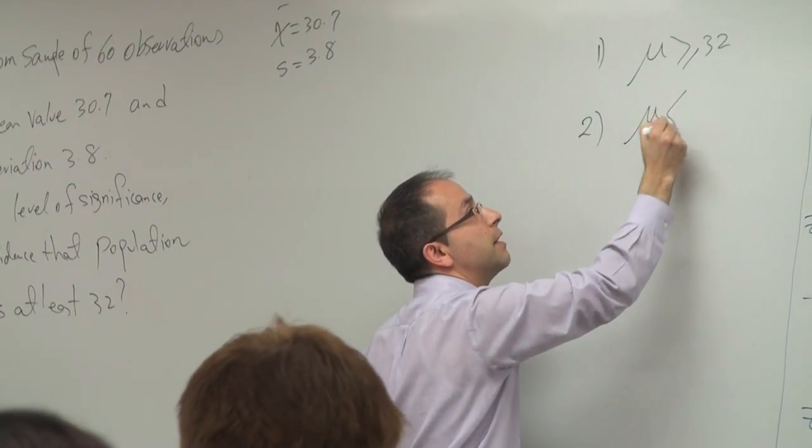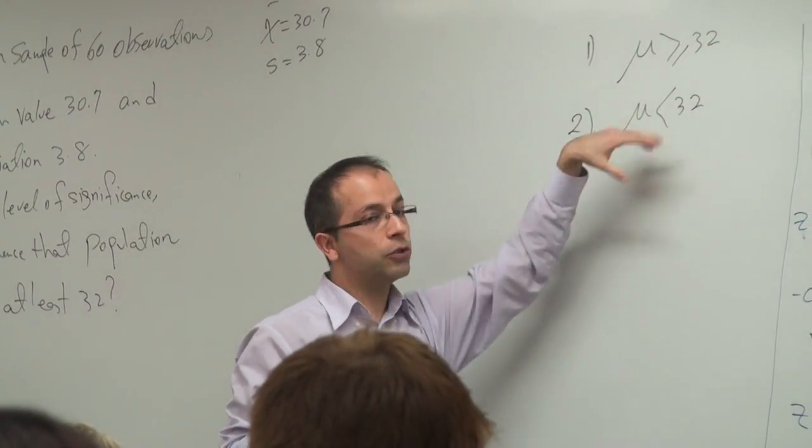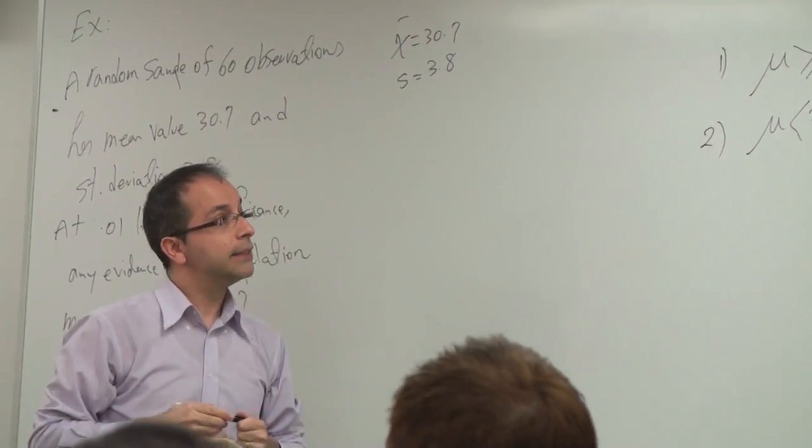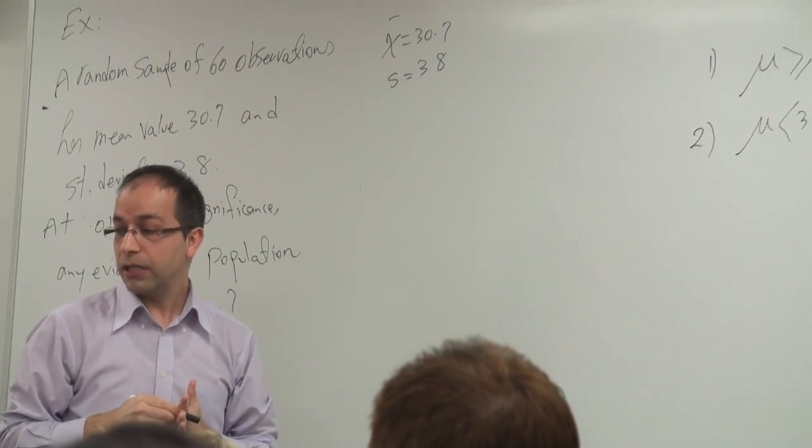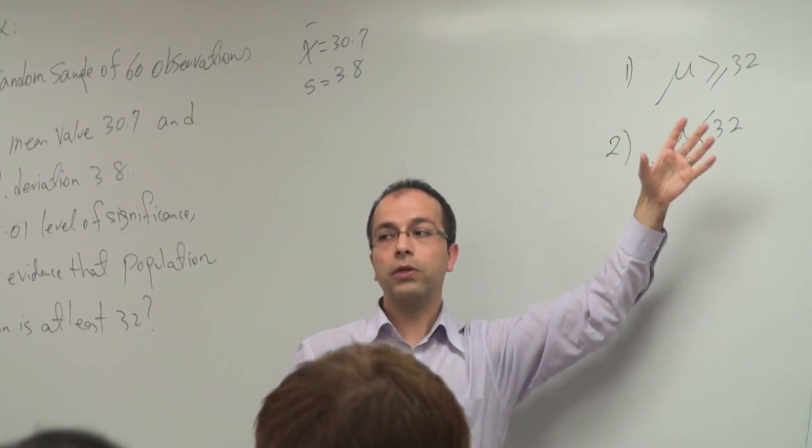μ is less than 32. Here you need to be careful because these two must be mutually exclusive—no overlap—and also collectively exhaustive. That is, these two should include all real numbers.